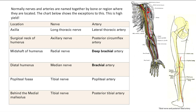At the distal humerus, it's just a regular straight-up brachial artery, right here. And that's where the median nerve gets damaged at the distal humerus.